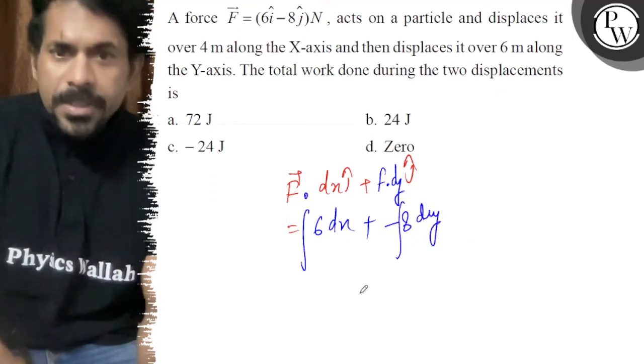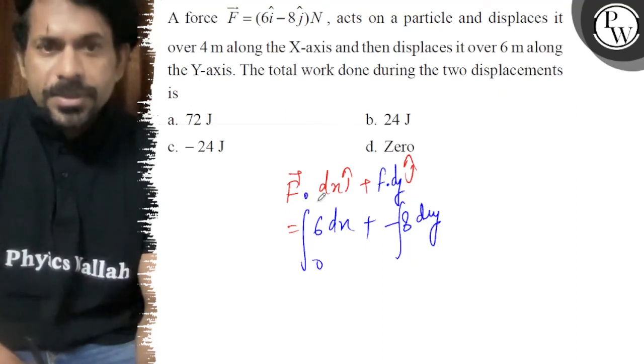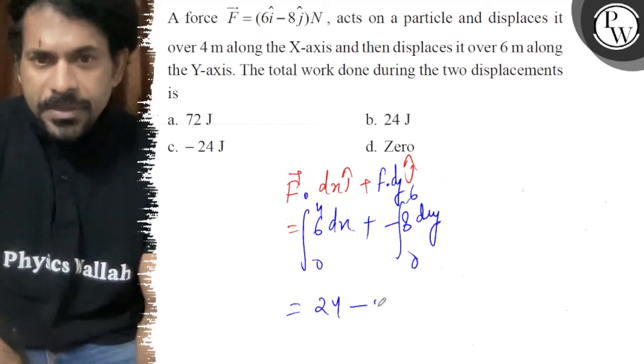Then integrate. From 0 to 4 and 0 to 6. So that is 24 minus 48.